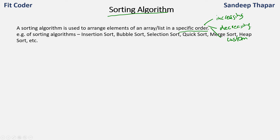A few of the famous sorting algorithms are insertion sort, bubble sort, selection sort, quick sort, merge sort, and heap sort. There are many sorting algorithms that exist, each with their own pros and cons. Depending on the problem we are trying to solve, we will pick one of the sorting algorithms and use it.